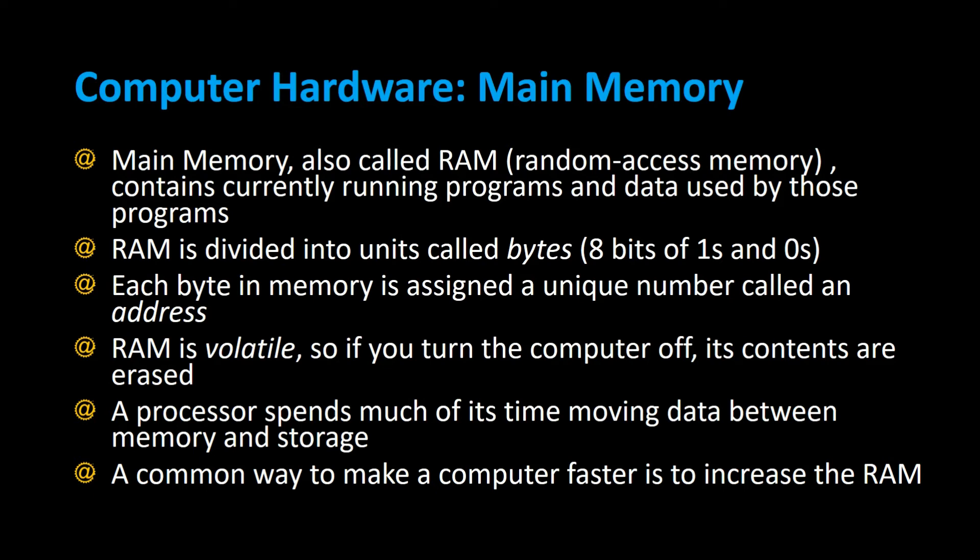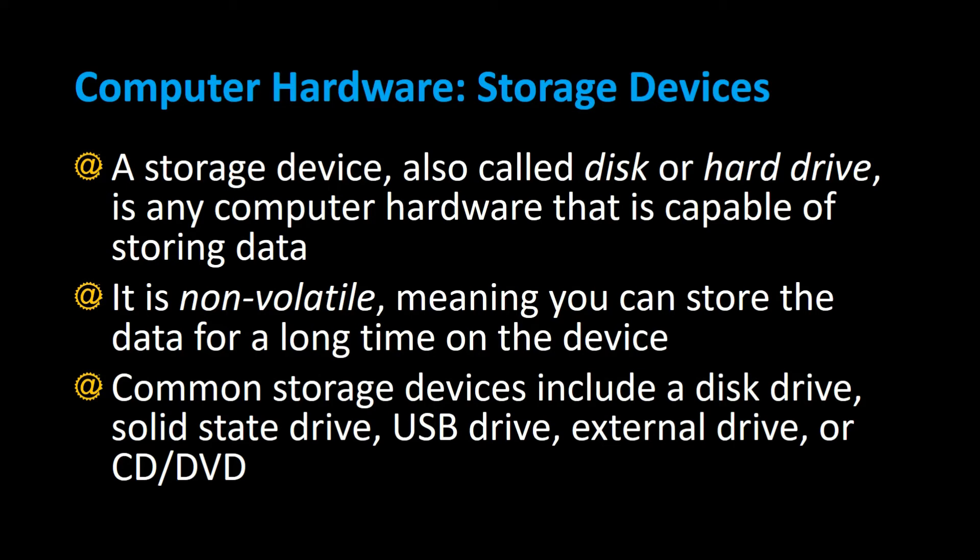but you never clicked save and your computer crashed for whatever reason — it was all in memory, all in the RAM, and then you lost all that data and you'd have to rewrite your entire program when you turned the computer back on. A processor spends much of its time moving data between memory and storage, and a common way to make computers faster is to increase the amount of RAM it has.